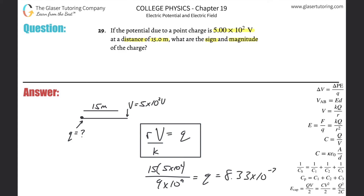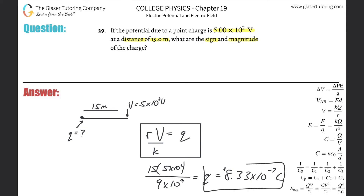That works out to be about 8.33×10⁻⁷ coulombs, and it's positive — because the voltage was positive. If the voltage were negative, Q would be negative and you'd have a negative charge. It's literally that simple.